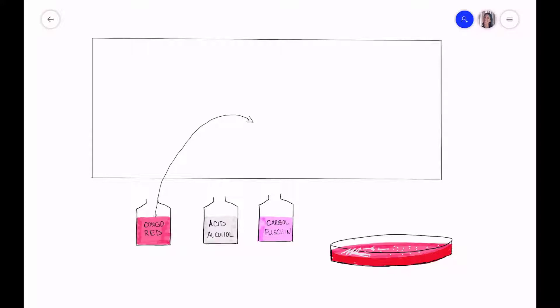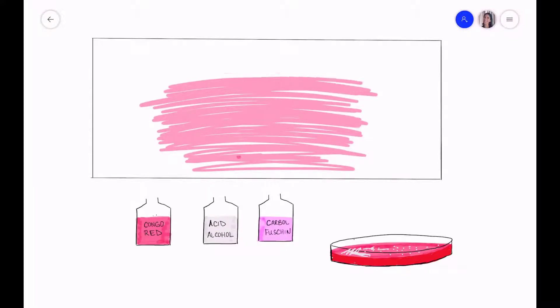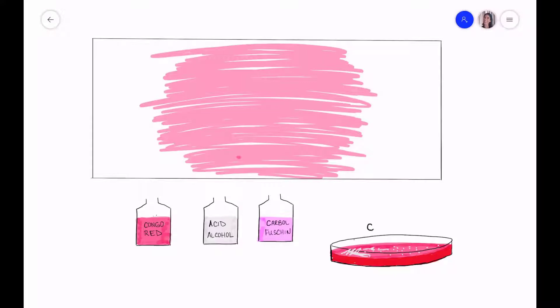So we start with Congo Red and we smear our Congo Red liquid solution all over the slide. This effectively paints the slide kind of a light pink so it paints the background. Then we're going to take some of our culture which includes capsulated bacteria and mix it thoroughly with the Congo Red spreading the bacteria around. Then we allow it to air dry.